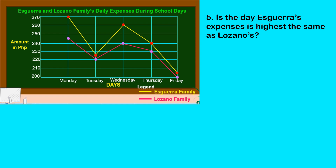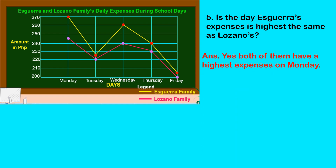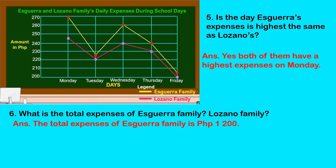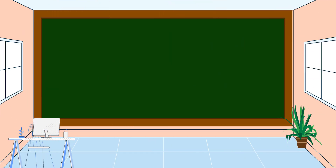Based on our graph, both families have their highest expenses on Monday. The last question: what is the total expenses of Sguera family? We add all the expenses from Monday to Friday. The total expenses of Sguera family is 1,200 pesos, while for Lozano family it is 1,135 pesos. I hope that you understand our lesson for today, and thank you for watching.